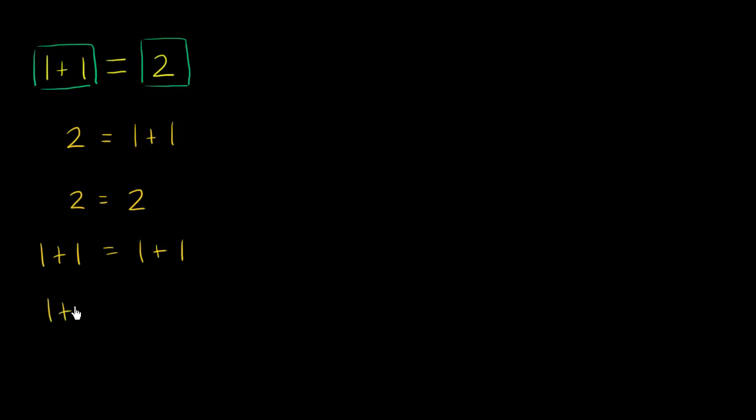I could have written 1 plus 1 minus 1 is equal to 3 minus 2. These are both equal quantities. What I have here on the left-hand side, this is 1. 1 plus 1 minus 1 is 1. And this right over here is 1. These are both equal quantities.